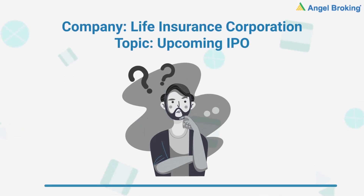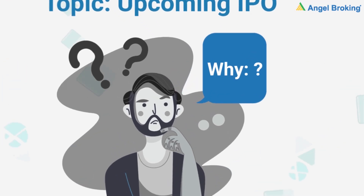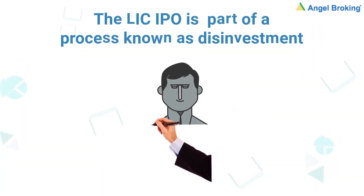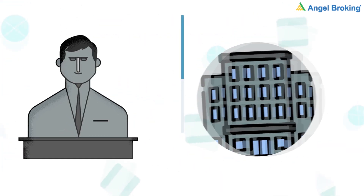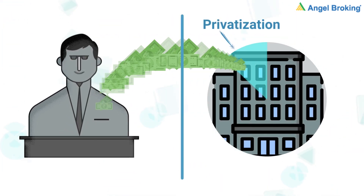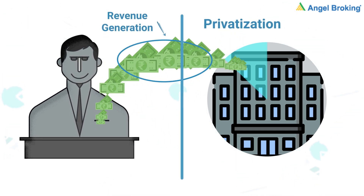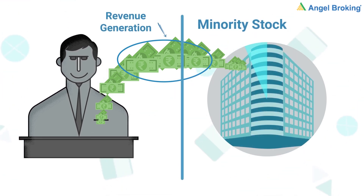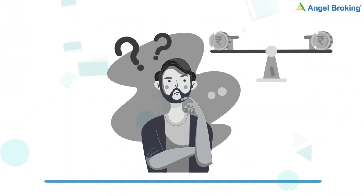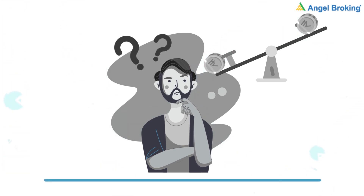Chaliye, is IPO ko aur gehrai se samajhte hain. Let's understand why this IPO is happening. The LIC IPO is part of a process known as disinvestment. Disinvestment ki zariye, government public corporations ko partly privatize karti hai. The purpose of disinvestment is to raise revenue for the government. Ye baat yaad rakhne jaisi hai ki government LIC mein minority stock bech rahi hai. Agar government majority stock bech di, toh paisa zyaada milta, par LIC ke operations aur future earnings per control kam ho jaata.